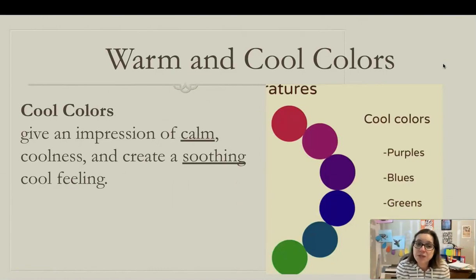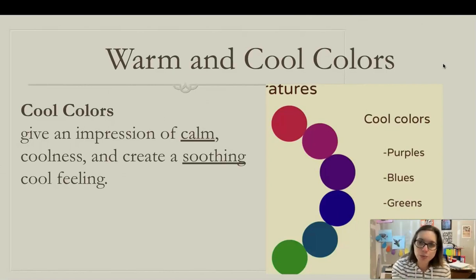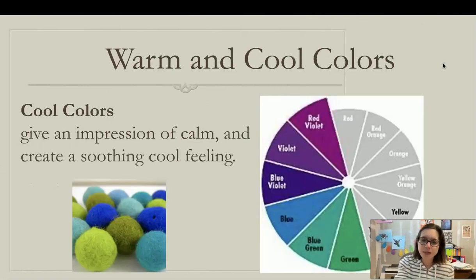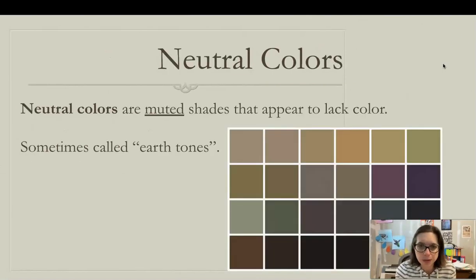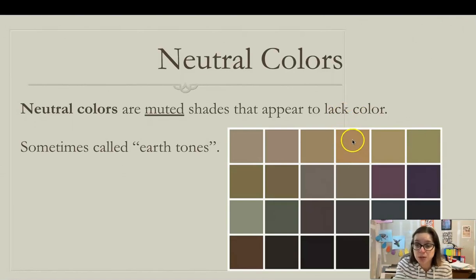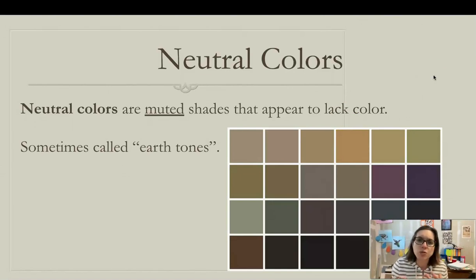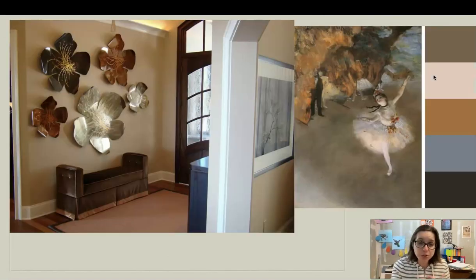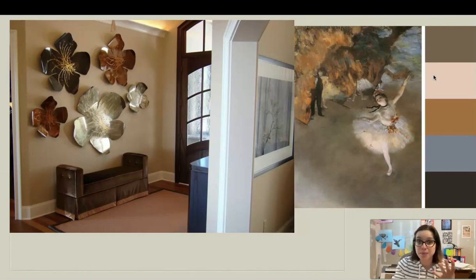Cool colors give an impression of calm and create a soothing feeling — mostly blues and greens. Note that yellow-green is technically a warm color, but regular green is a cool color. Our last set of colors are called neutral colors: muted shades that appear to lack color. They might have hints of green, orange, or violet, but we think of them more as earth tones — blacks, grays, and browns. We do see neutral colors used in paintings and interior room decor.